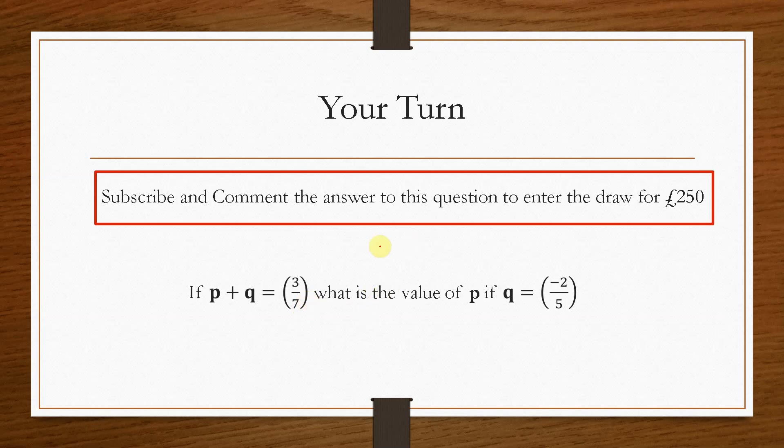Therefore, we would need to rearrange this equation in order to find p. Once you have the value of p, just comment your answer, use a comma to separate the top value and the bottom value, and only valid subscribers with the correct answer will be entered into the prize giveaway each month. The more videos that you comment on, the more entries that you will have.